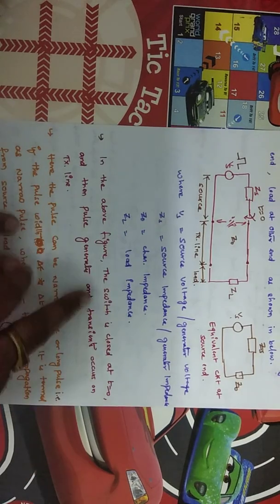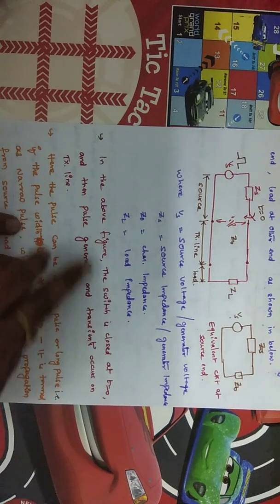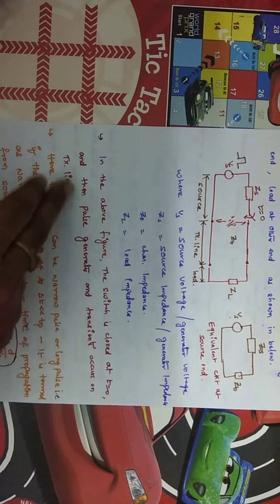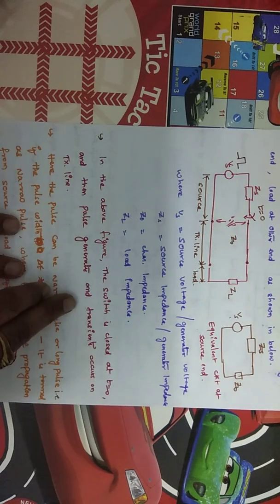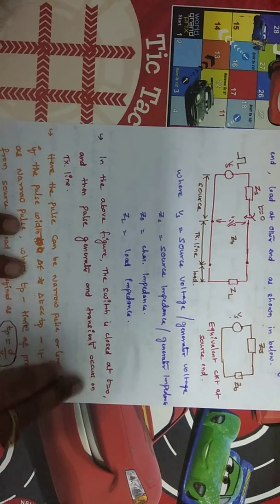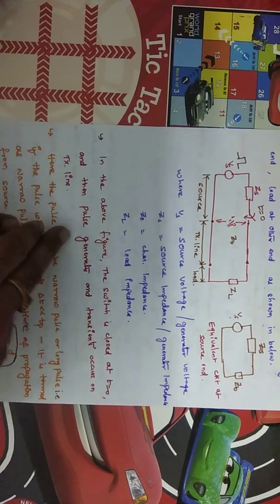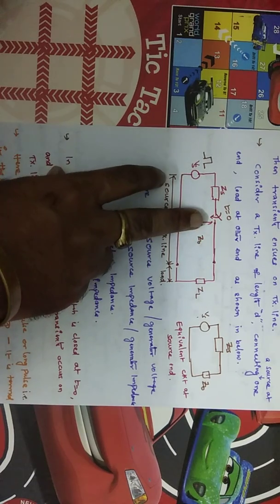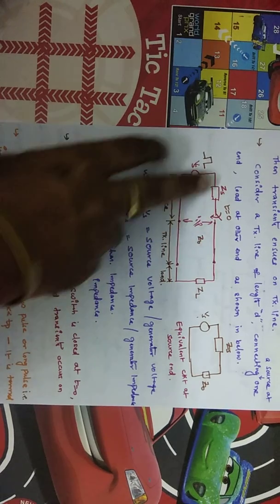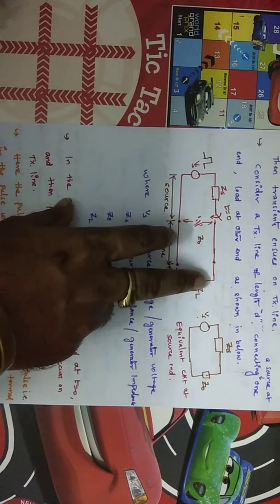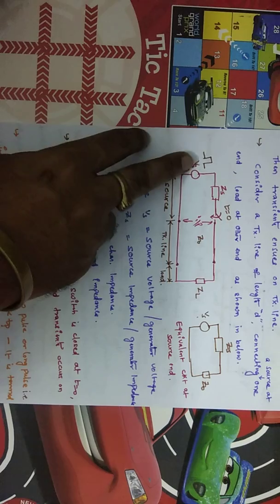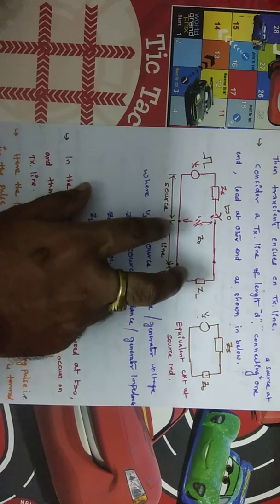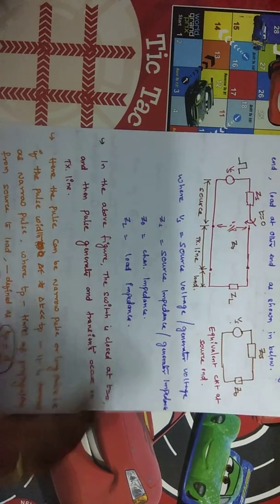In the diagram, the switch is closed at t equal to zero, the pulse is generated, and transients occur on the transmission line. When the switch is closed, there is a path to generate the pulse, and when the pulses are generated, transients occur.